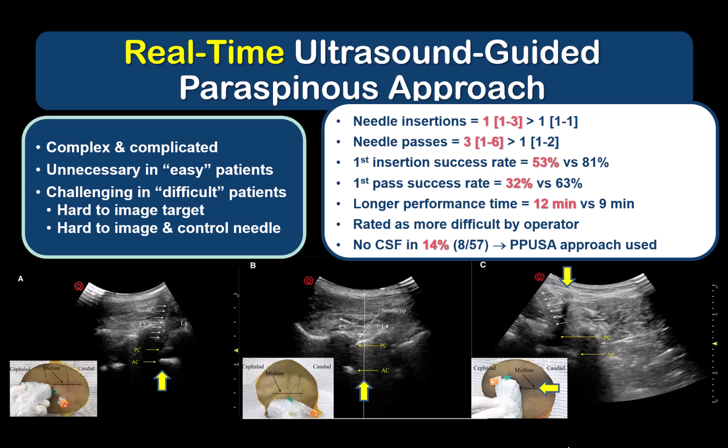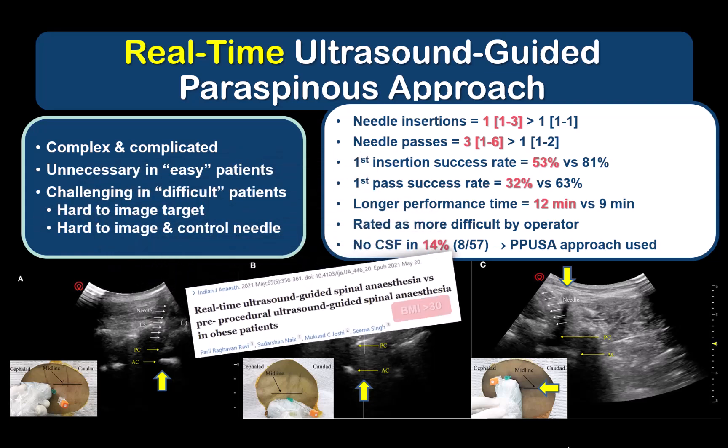In my opinion, real-time guidance is only potentially useful when you have a patient with really small spaces that can only be accessed with great precision. However, imaging in these patients is also very challenging, and being able to keep the small interlaminar target in view while localizing your needle tip requires very advanced skills. Studies that support real-time ultrasound-guided neuraxial blocks are all generally in Asian patient populations, where the spectrum of body habitus is perhaps more favorable to the technique. I personally find it very challenging and thus do not routinely perform it. My recommendation is to master pre-procedural scanning and skin marking, and then to focus on needle handling and tactile feedback.